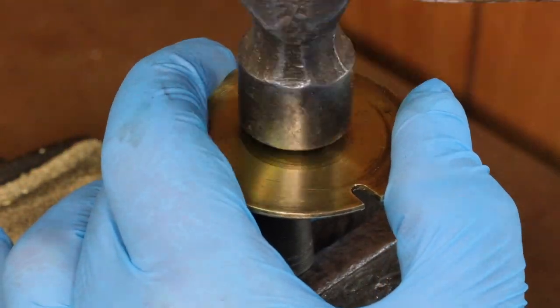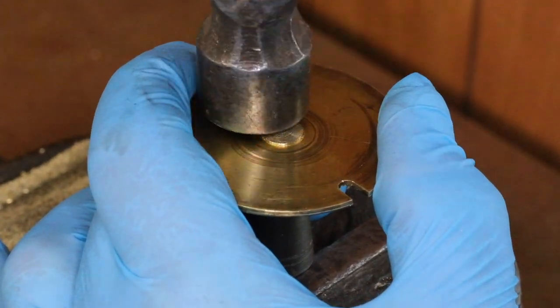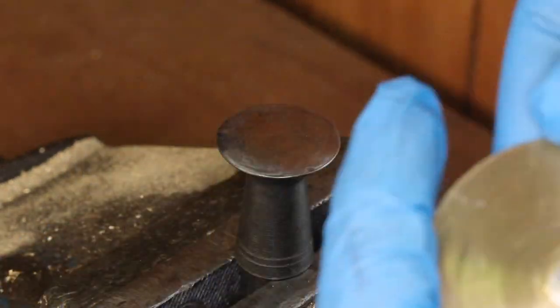So again, rivet from both sides, bearing in mind not to distort the barrel cap. Once the plug is riveted in, same process.